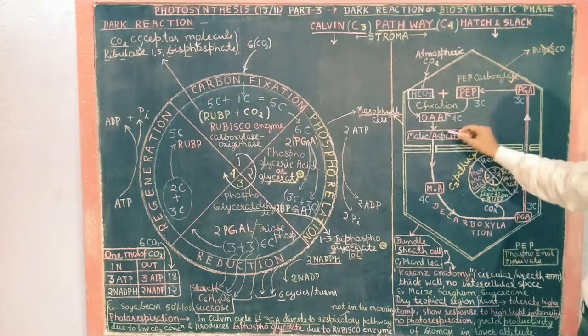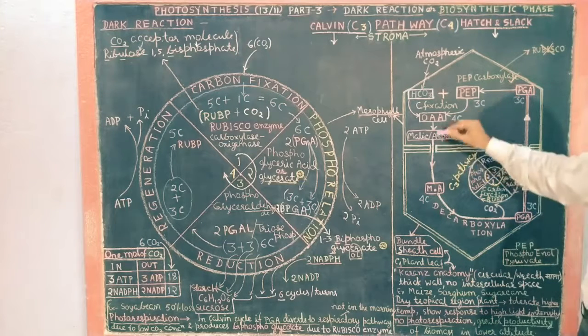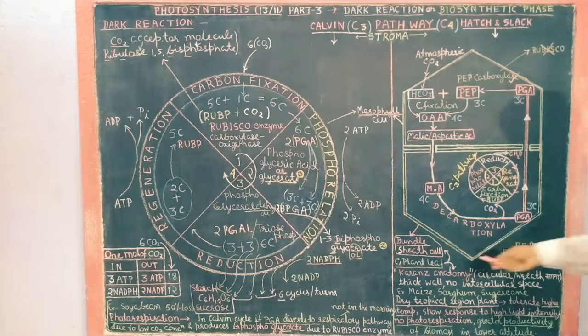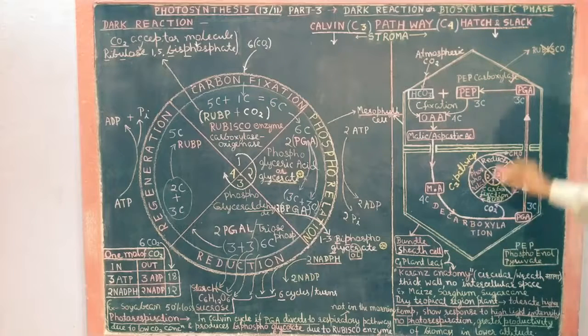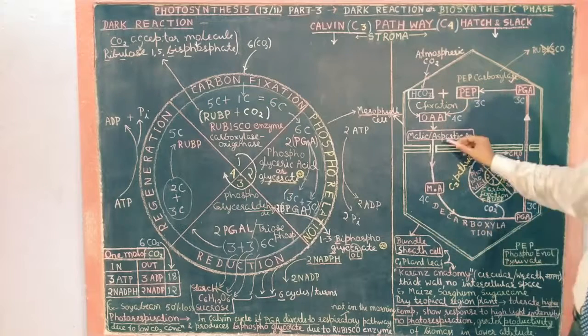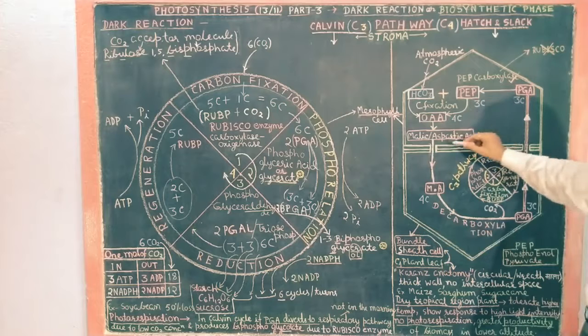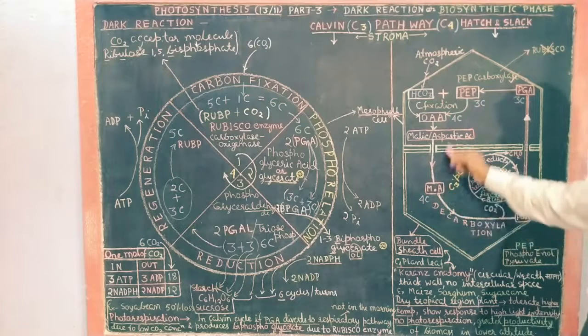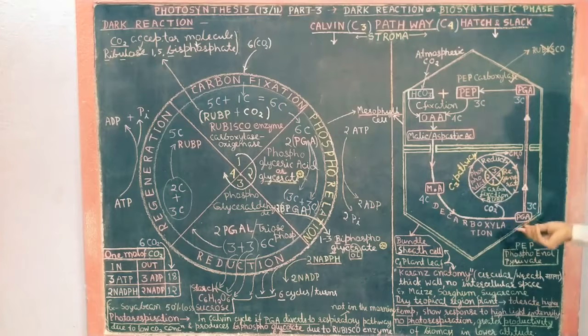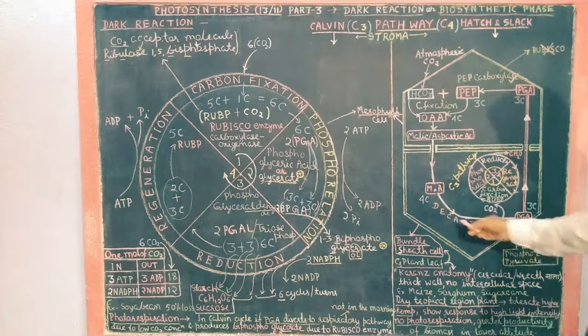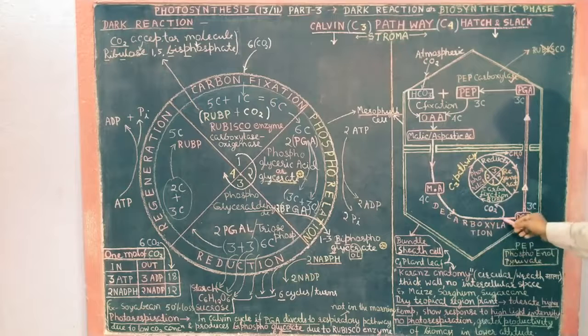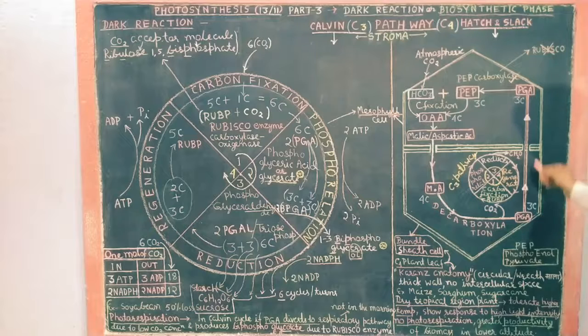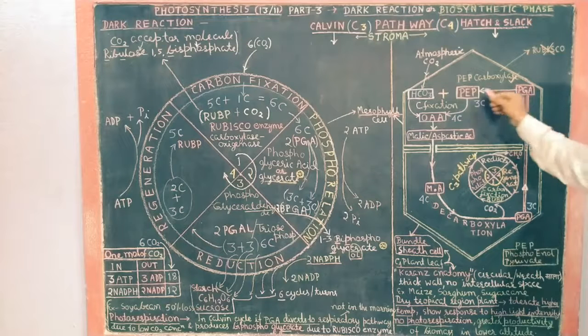PEP, the first process is carbon fixation. After that this oxaloacetic acid is converted into malic and aspartic acid. This is plasmodesmata. This is in the other cell, it is called bundle sheath cell. In C4 plant bundle sheath cell, there this malic acid undergoes decarboxylation.